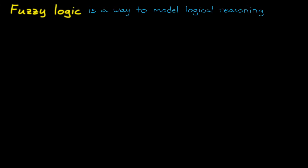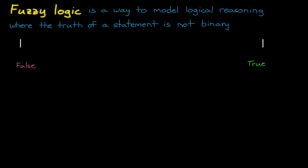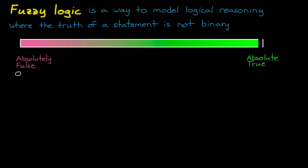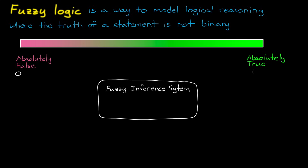Fuzzy logic is a way to model logical reasoning where the truth of a statement is not a binary true or false, like it is with classical logic, but rather it's a degree of truth that ranges from 0, which is absolutely false, to 1, which is absolutely true. Fuzzy logic allows us to design a fuzzy inference system, which is a function that maps a set of inputs to outputs using human interpretable rules rather than more abstract mathematics.